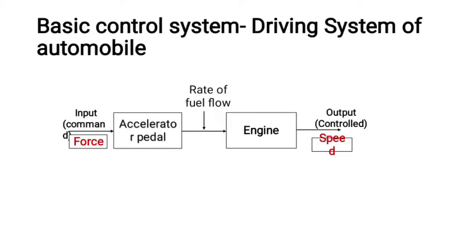As an example, consider the driving system of an automobile — one person driving a vehicle. Here the input command is force applied to the accelerator pedal. When force is applied, the rate of fuel flow increases; the engine works faster, and vehicle speed increases. So the output is speed, which depends on the input force. The accelerator pedal, engine, and rate of fuel flow all act as the process.